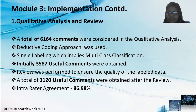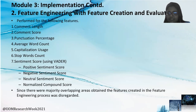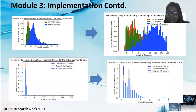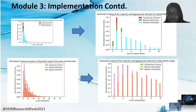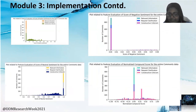Under the qualitative analysis and review, a deductive coding approach was used, with single labeling implying multi-class classification. A review was performed to ensure the quality of the labeled data. Feature engineering was performed for the following features. These are the feature plots used for evaluation of external features. Since there is a certain amount of overlapping, these features were disregarded.